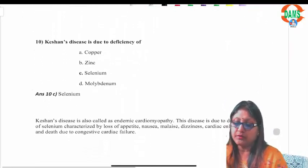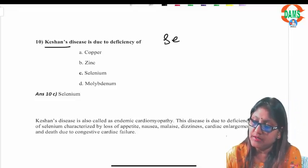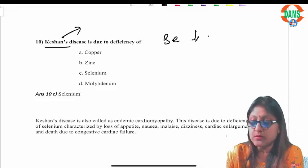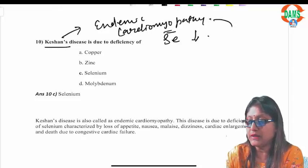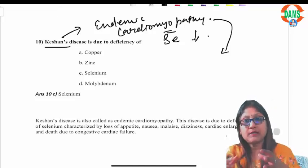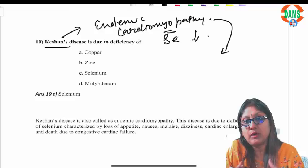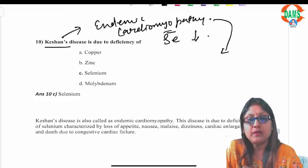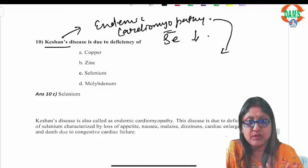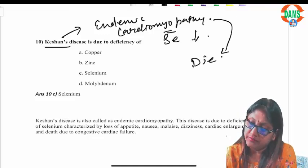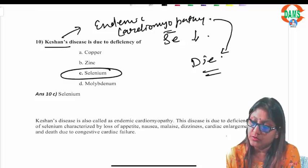Question ten: Keshan's disease is due to selenium deficiency. It is also known as endemic cardiomyopathy, characterized by heart involvement. It is endemic because the soil in affected areas is deficient in selenium, so all inhabitants tend to develop selenium deficiency. Features include cardiomyopathy, loss of appetite, malaise, loss of weight, and nausea, and patients can die due to heart failure.